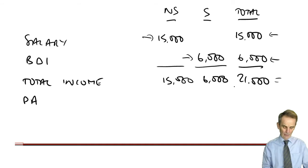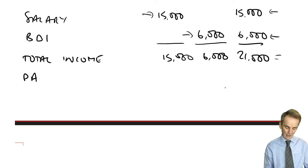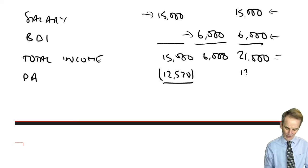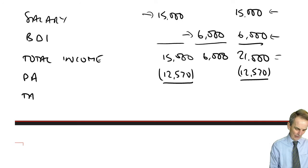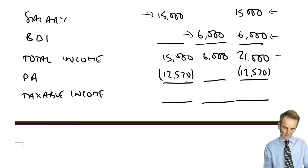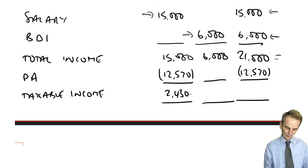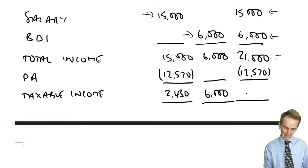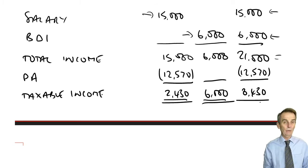The £12,570 personal allowance goes against the total as well, bringing us down to taxable income figures. £12,570 from £15,000 gives us £2,430 taxable non-savings income. The £6,000 savings income is untouched. Total taxable income is £8,430. Cross-cast: £2,430 plus £6,000 equals £8,430.